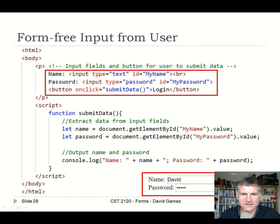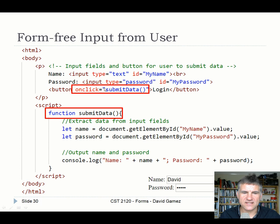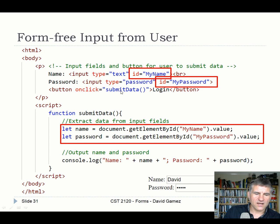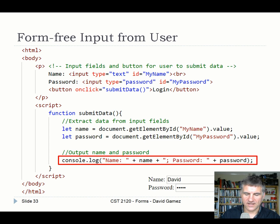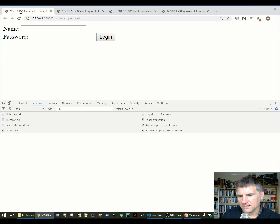Here's how this works without a form tag at all — just input elements directly. We have a text input and a password input, each given an ID. Instead of input type='submit', we have a button with an event listener that calls the function submitData when clicked. Inside submitData, document.getElementById pulls out the name and password values. Remember to use .value — getting the element itself isn't enough. The data is then logged to the console.